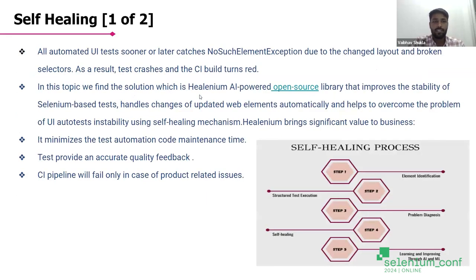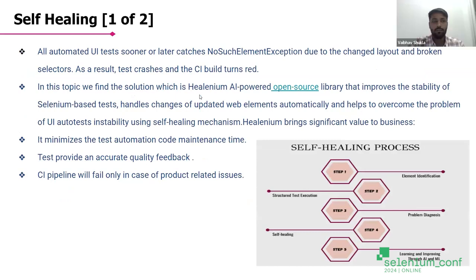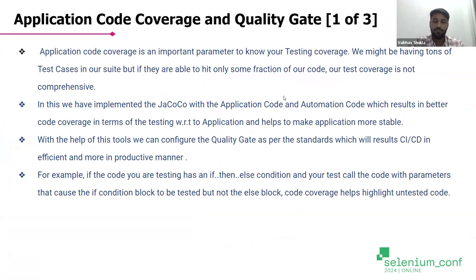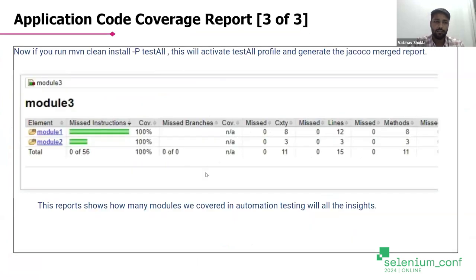So first we talk about what is self-healing. When we are getting a no-such-element exception, with the help of Helenium we can reduce these errors. It has open source. You can see this is a sample report when we are using Helenium. It works by reducing the maintenance cost. The other is application code coverage — here we are using JaCoCo, which provides code coverage. You can see how many modules we are covering on the automation side.